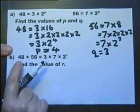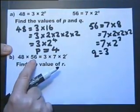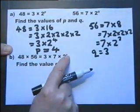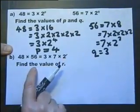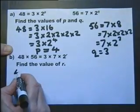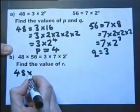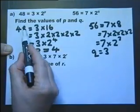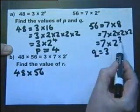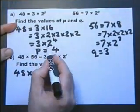Part b. 48 multiplied by 56 is 3 times 7 times 2 to the power of... Well, we've got to find out what that is. So we've got 48 multiplied by 56. There's 48. There's 56. There's 48. There's 56. So let's write down...